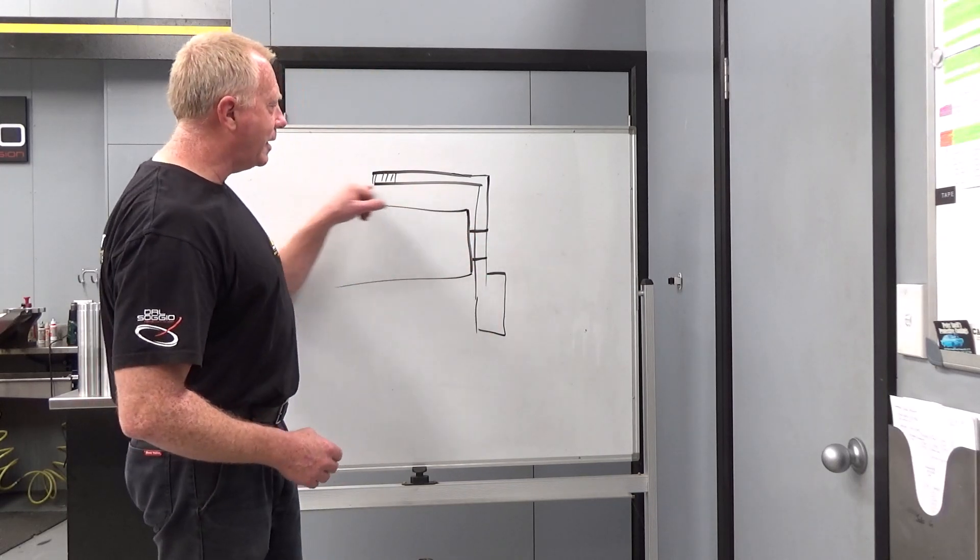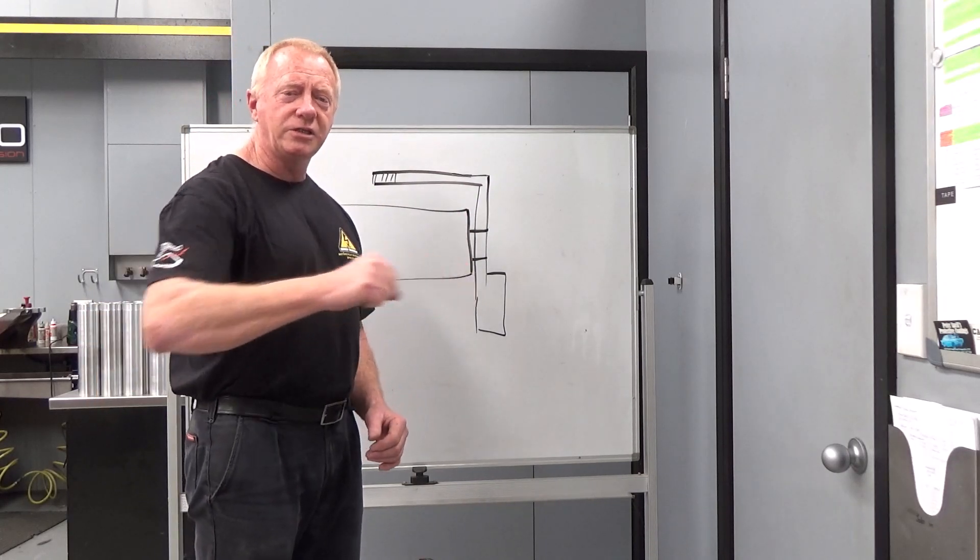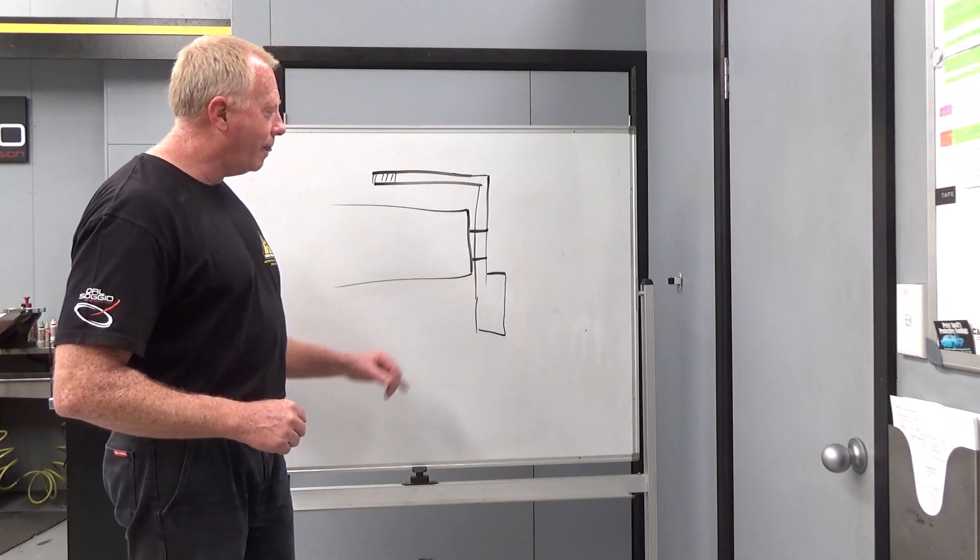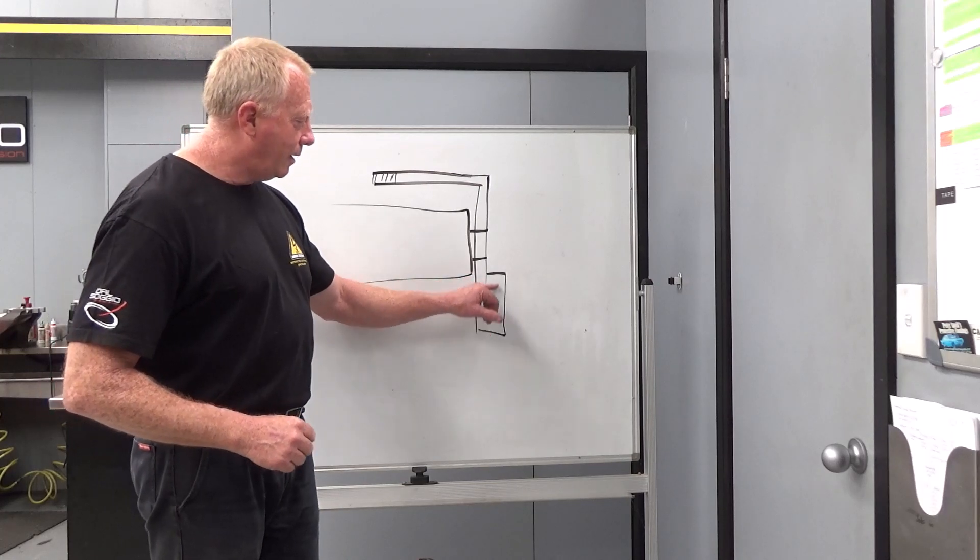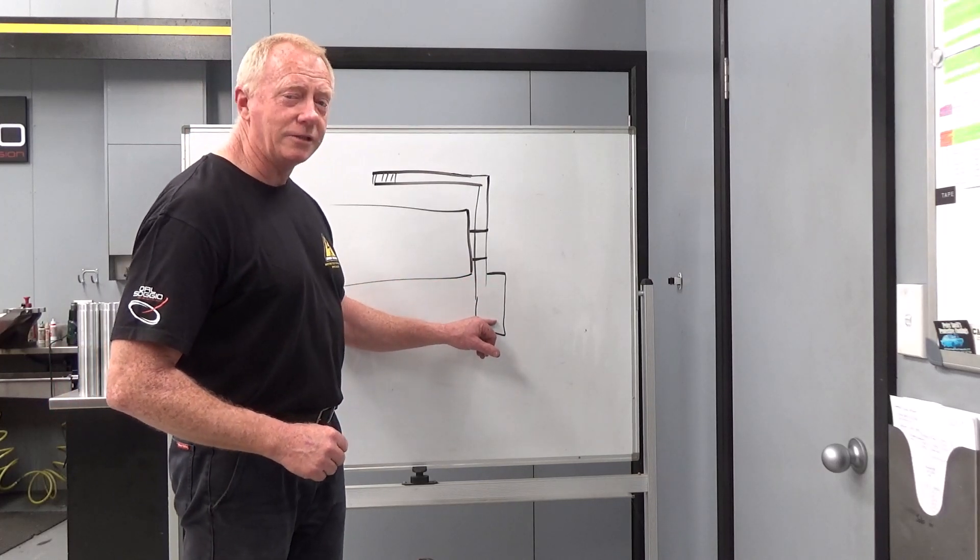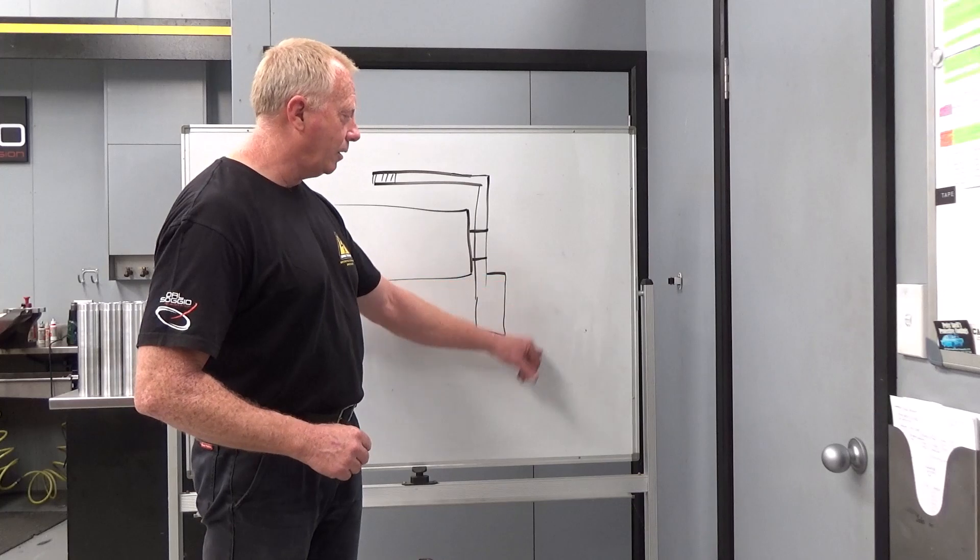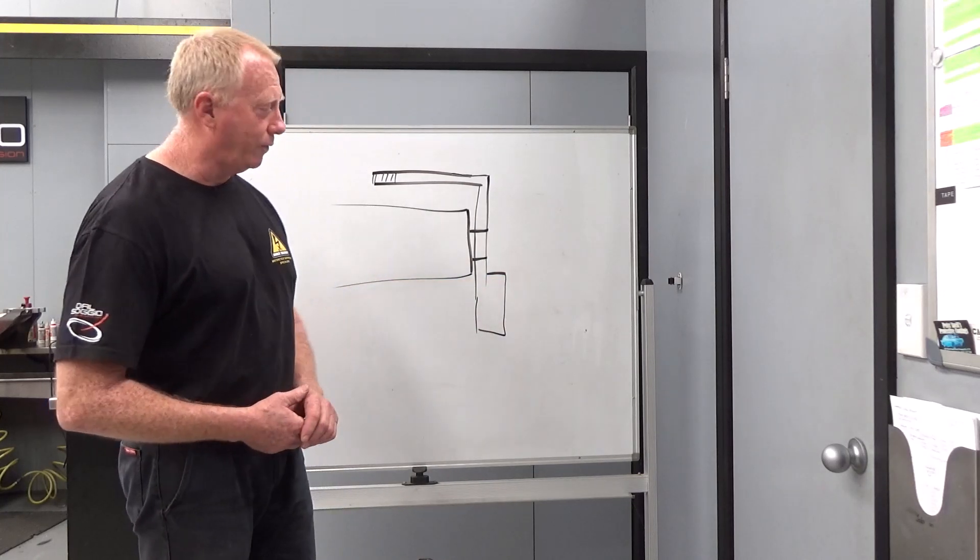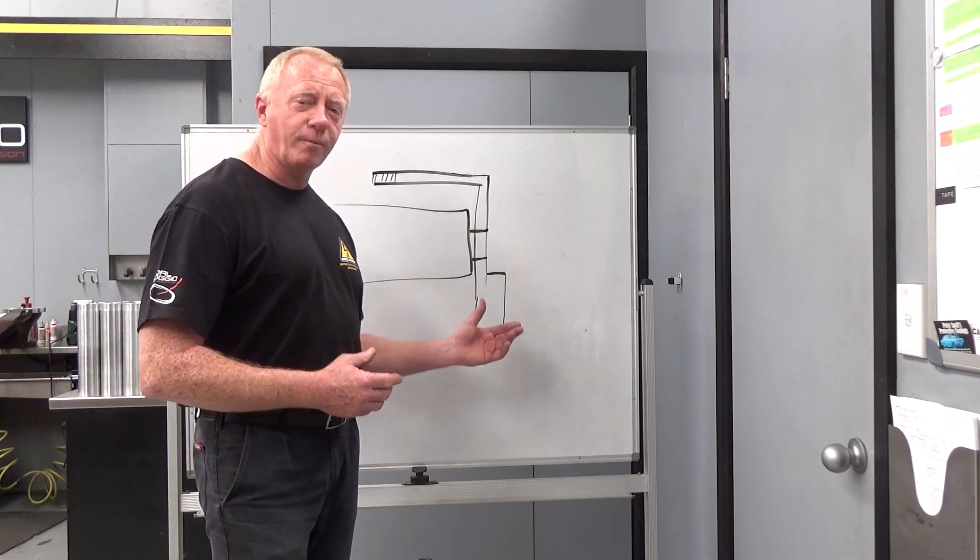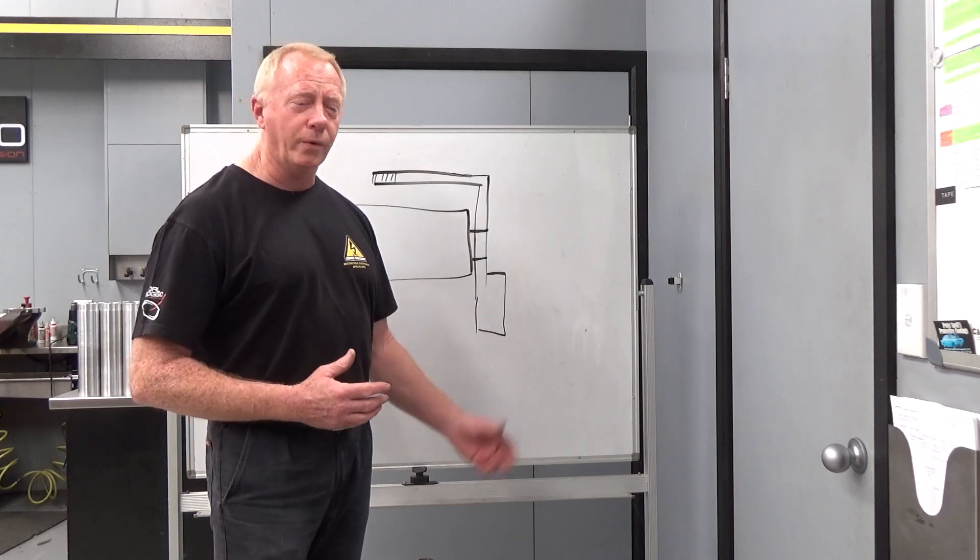If we want to make our tiller arm longer and longer, we'll find it becomes easier and easier to move. But if we make our rudder shorter, it'll become easier to move as well. If we make our rudder longer, it will become harder to move. But that will have a profound effect on our cornering.